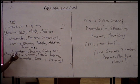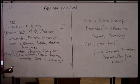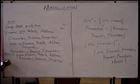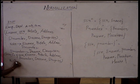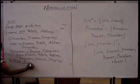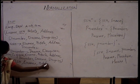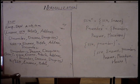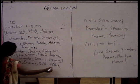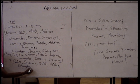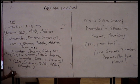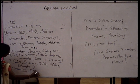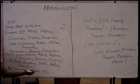SSN implies d number, and d number implies d name — that is in the form of transitive dependency. To make this relation in third normal form, remove the transitive dependency such that R1 consists of SSN (key attribute), ename, birth date, address, and d number; and R2 consists of d number (key attribute), d name, and d manager SSN.